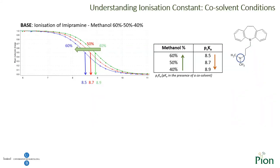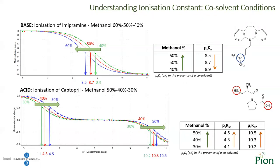This is the case of imipramine. Imipramine is a base with a pKa of 9.34. The analysis was performed in different percentages of methanol-water from 60 to 40%. It is easy to observe that when the sample is 50% ionized for different methanol percentages, the pKa changes. Here is the case of captopril. Captopril has two pKas and both are acids. The percentage of methanol-water used was from 50 to 30%, and again both pKas change with media composition.